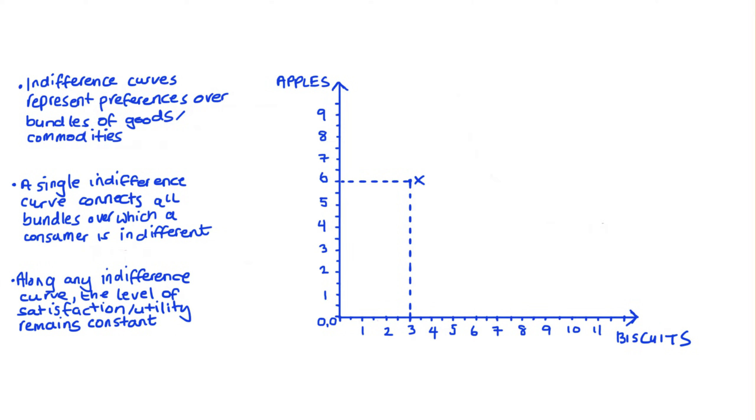Point X, for instance, represents a bundle with three biscuits and six apples. Point Y represents a bundle with two biscuits and four apples. And point Z represents a bundle with six biscuits and two apples. Now let's just say that I value bundle X exactly the same as I value bundle Z. That is to say I'm indifferent between them.